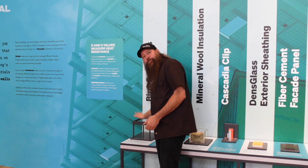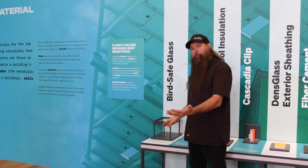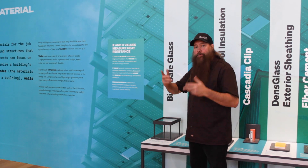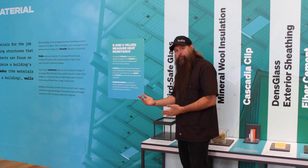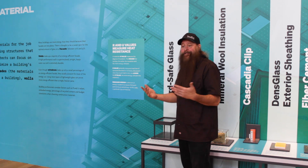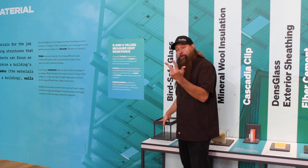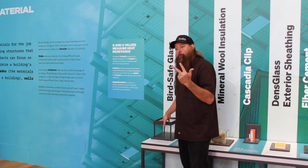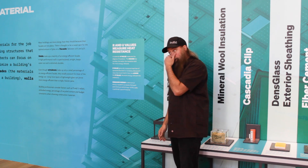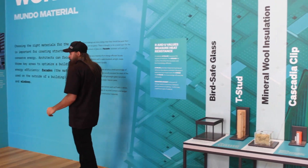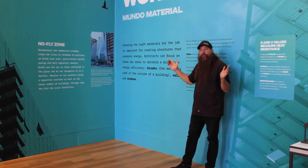Next: bird-safe glass. More and more, our buildings have more glass — we call them glass boxes. However, birds don't see the glass; it's the last thing they see before they hit it. Bird-safe glass allows birds' way of seeing to pick up the surface, avoid impact, and go on to other routes.